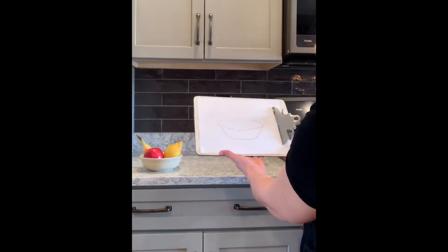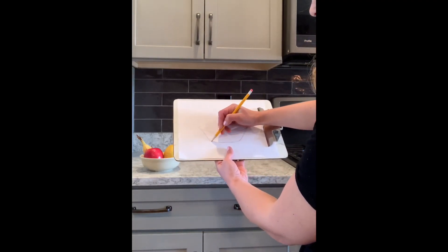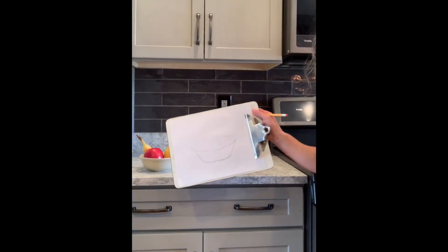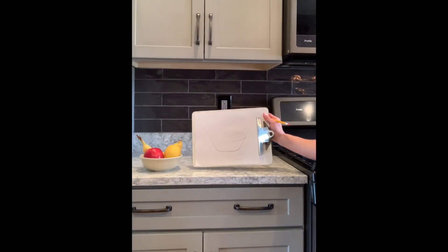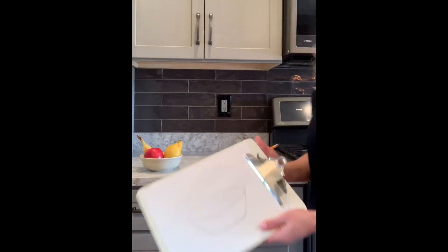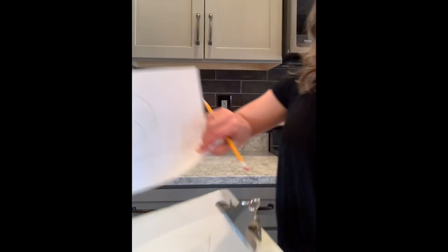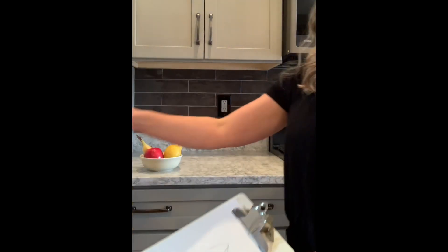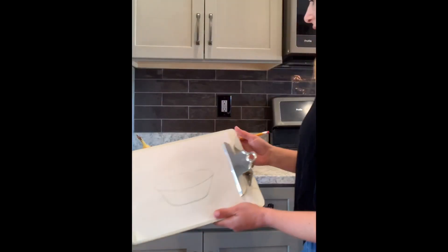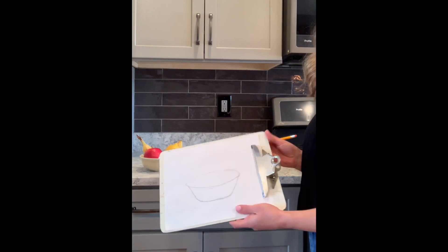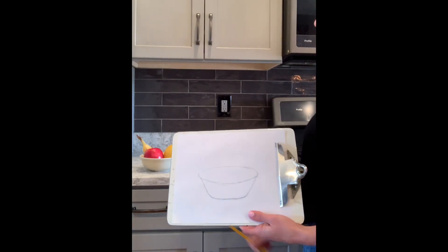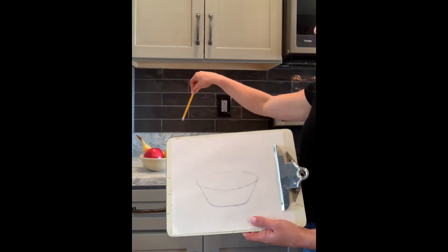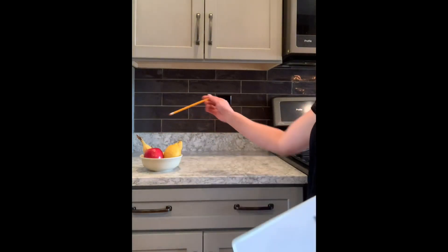My bowl isn't super even or super centered, but I think it is an improvement and I can work with it and adjust as I go — it's looking much better than what we had before. Now I like to start with the fruit that's in front, because if I drew the whole banana, the apple is covering a lot of it anyway. So I like to start with what I see and then add in the parts that are behind.